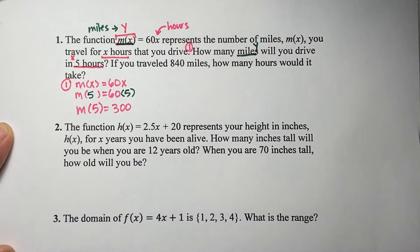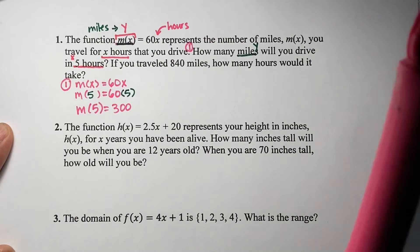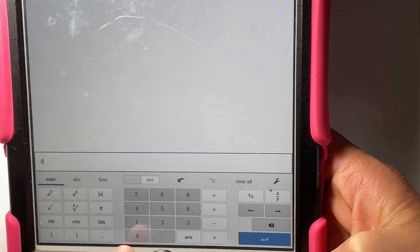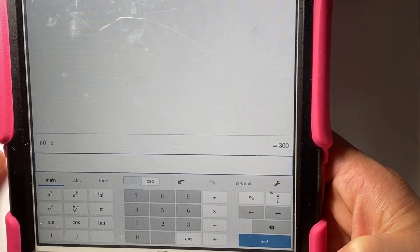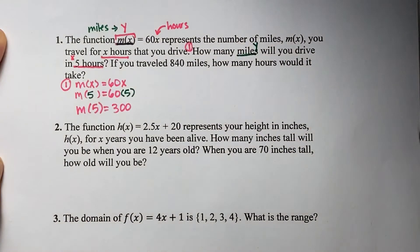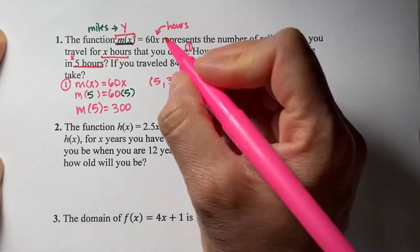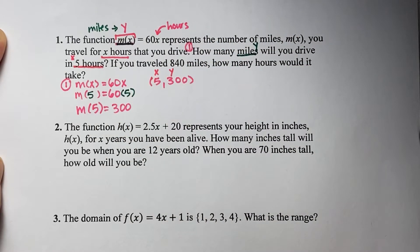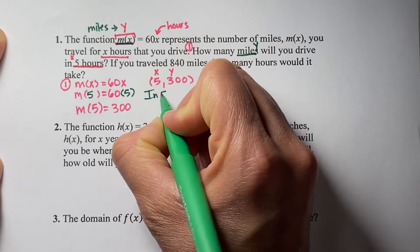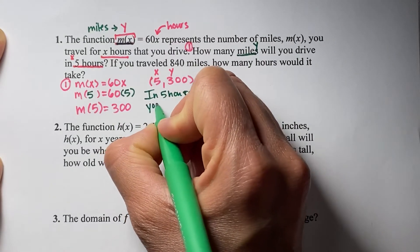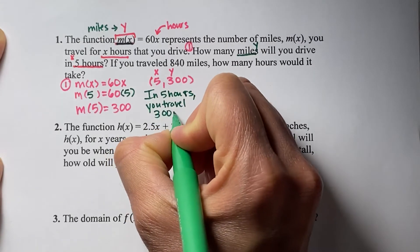You can use your scientific calculator or a calculator app. To verify: 60 times 5 is 300. As a coordinate point, that's (5, 300), where x is number of hours and y is number of miles. In words describing the situation: in five hours, you travel 300 miles.